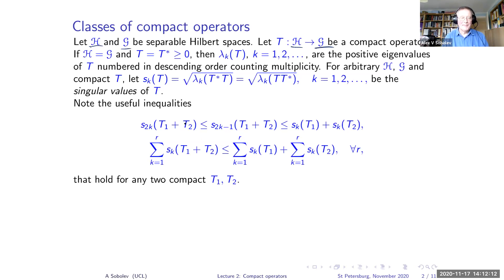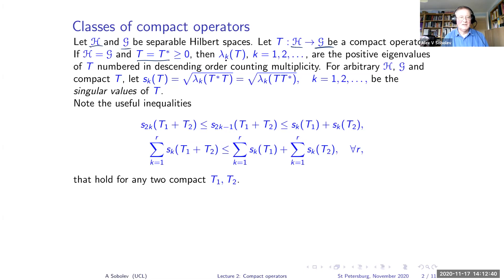When the two spaces coincide and the operator is self-adjoint and non-negative, we denote by λ_k the positive eigenvalues of T, labeled in descending order and counting multiplicity — every eigenvalue is counted as many times as its multiplicity. I restrict to non-negative operators here to avoid dealing with negative eigenvalues that appear in the general case.